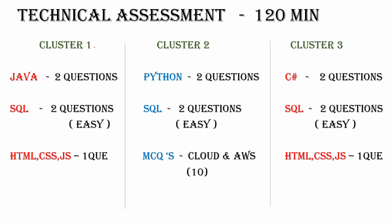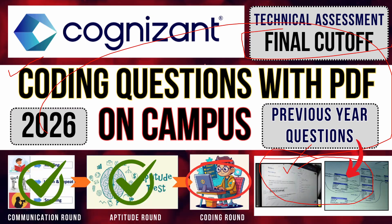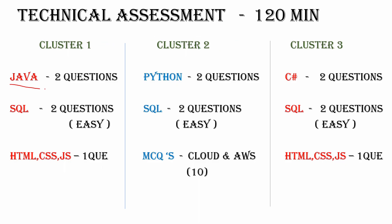Depending on your cluster you have to attempt and prepare for the technical assessment round. They are having Cluster 1, Cluster 2, and Cluster 3. Some students will select Cluster 2 but will get Cluster 1 or Cluster 3 automatically — sometimes clusters are given randomly even if you pick a particular cluster. I already explained in a previous video how to know your cluster; if you did not watch that, please go and watch.